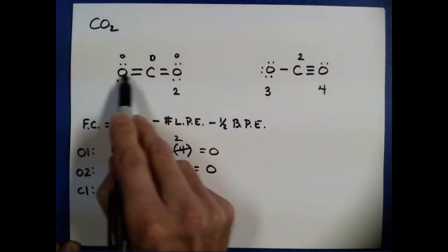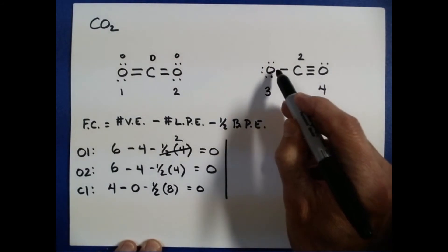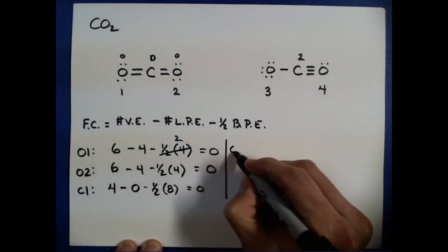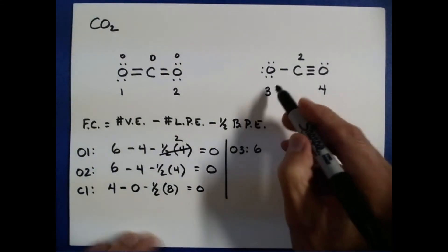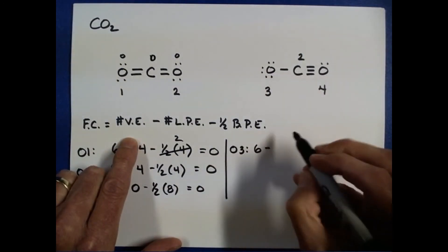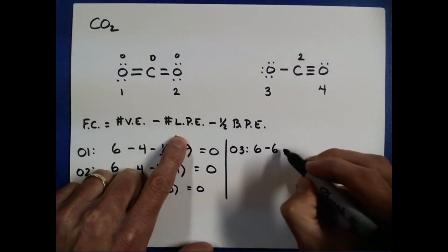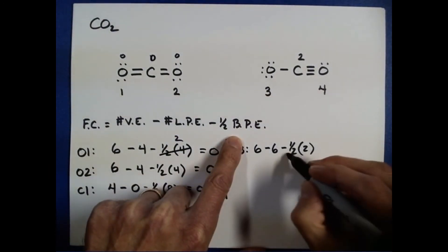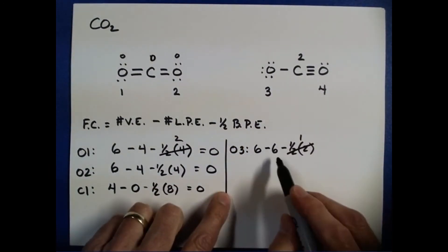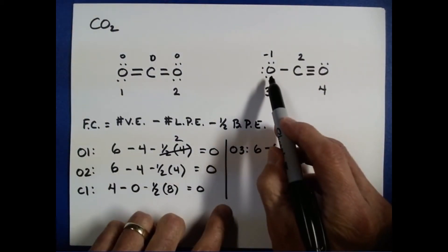So all three atoms in this particular Lewis structure have a formal charge of zero. Now let's apply this to the atoms in the second Lewis structure. For oxygen three: six valence electrons minus six lone pair electrons minus half of two bond pair electrons. Half of two is one, so six minus six minus one is negative one. This particular oxygen has a formal charge of negative one.